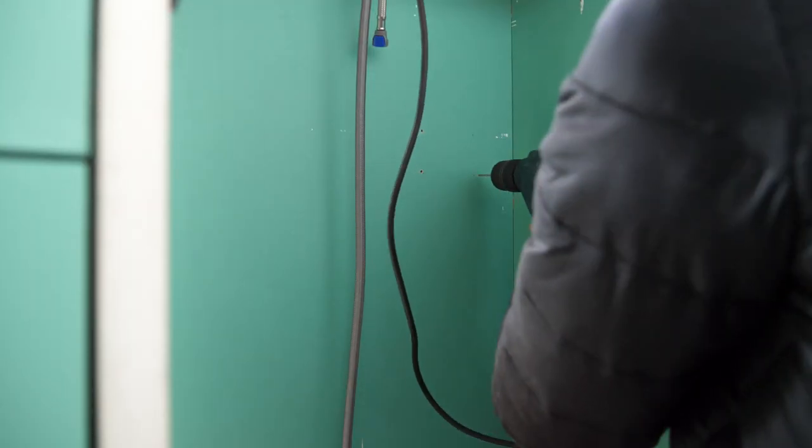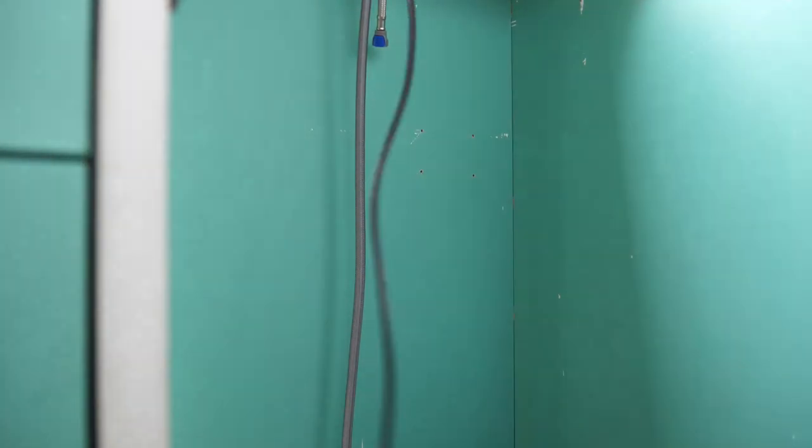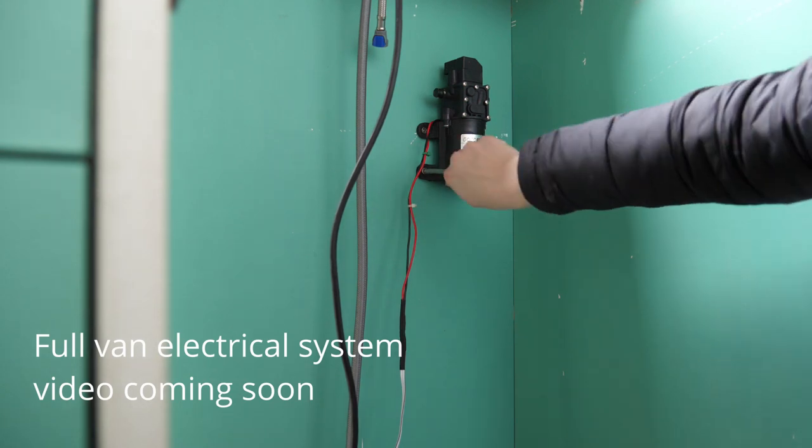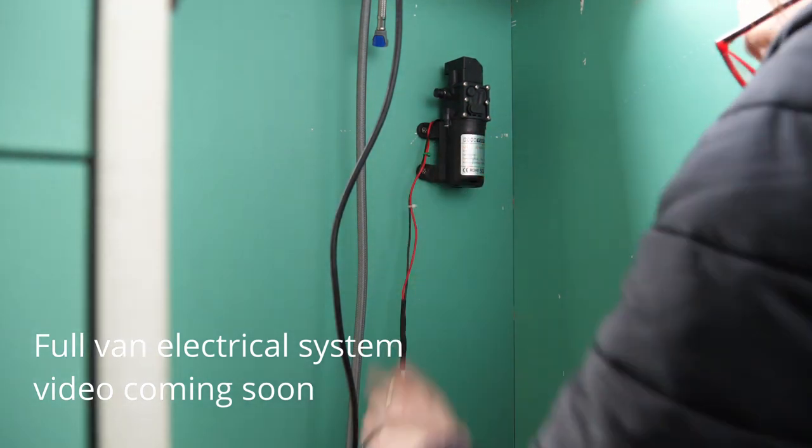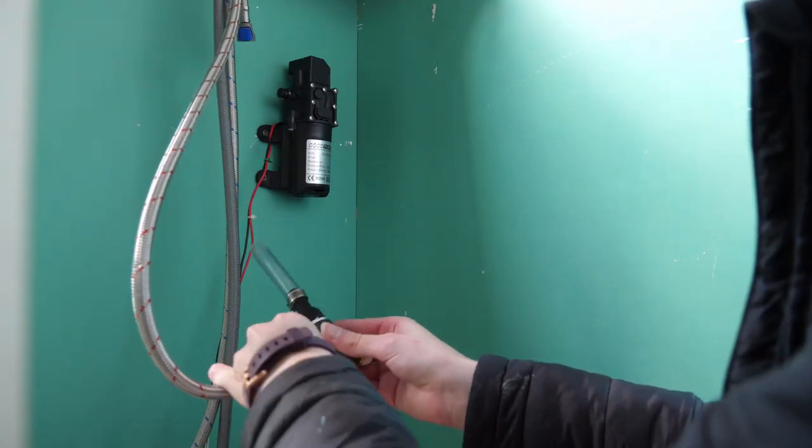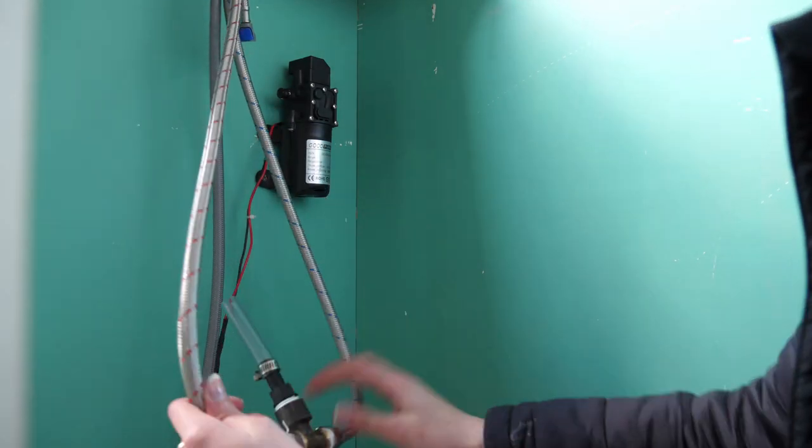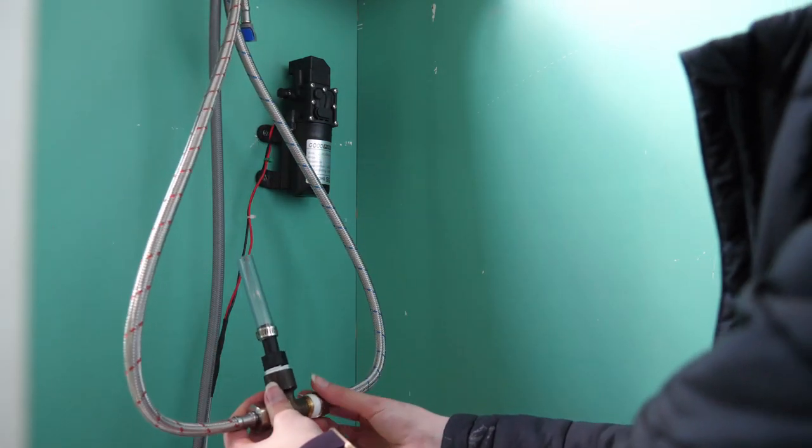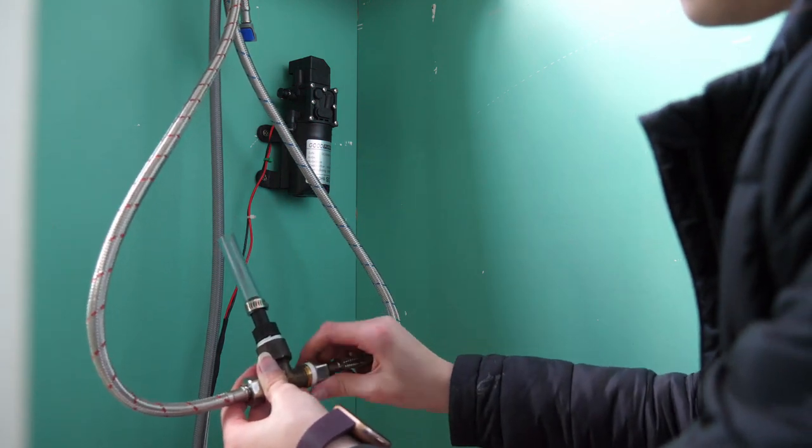The first step was to screw the hot and cold water inlets into the base of the tap. Then I pre-drilled and screwed my 12 volt water pump into the inside of the cupboard. Then I used a T-joint to combine the hot and cold water inlets.